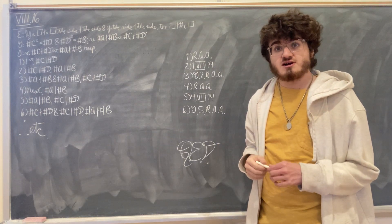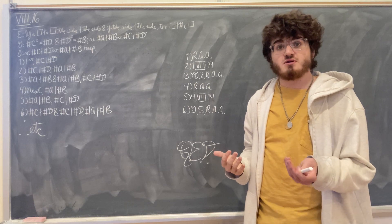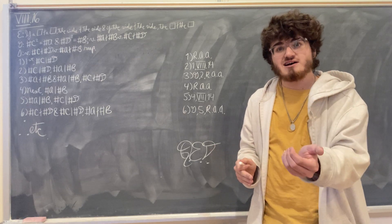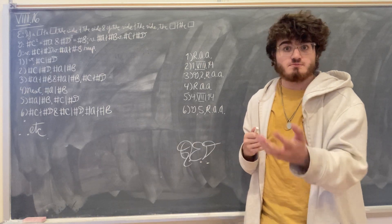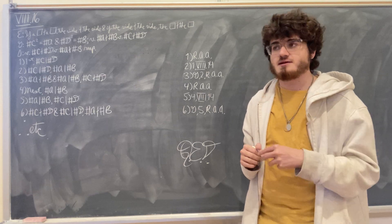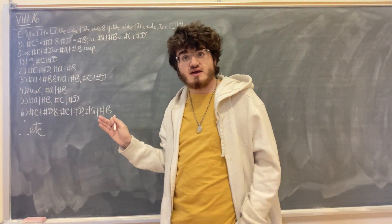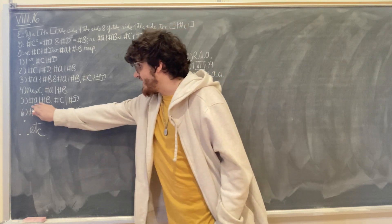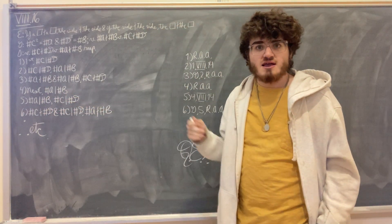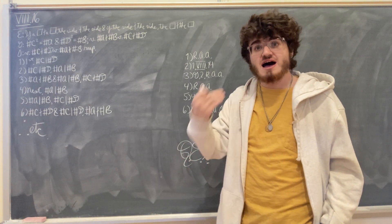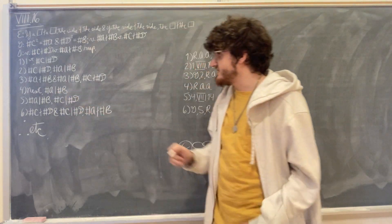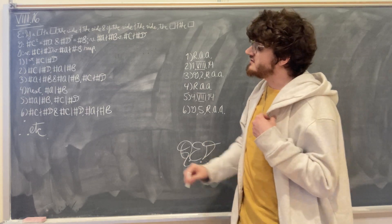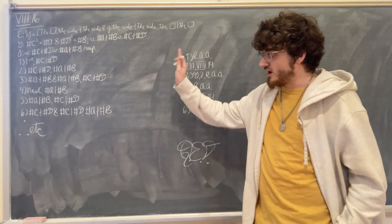If, on the other hand, on the converse, we are given that the number C does not measure the number D, we want to prove that the number A does not measure the number B. For if the number A does measure the number B, then we know that the side of A will measure the side of B — that is, again, Proposition 8.14, but the first part of it. So because the number A measures the number B, the side of A will measure the side of B. But we know the side of A is C and the side of B is D. So because A measures B, C also measures D. But again, this is contrary to what we were given; we were given that the number C does not measure the number D. And so if the number A does measure the number B, what follows is that the number C both does not and does measure the number D, which is obviously absurd.